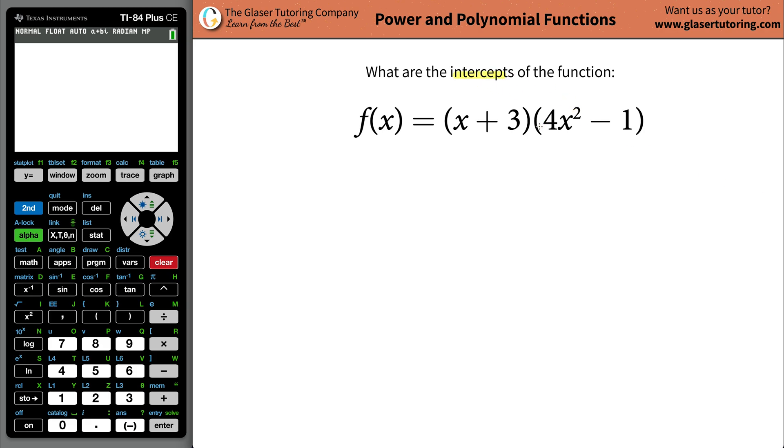What are the intercepts of the function f(x) equals (x + 3) multiplied by (4x² - 1)? First thing is we have to understand what they mean by intercepts. We have two types: x-intercepts and y-intercepts.